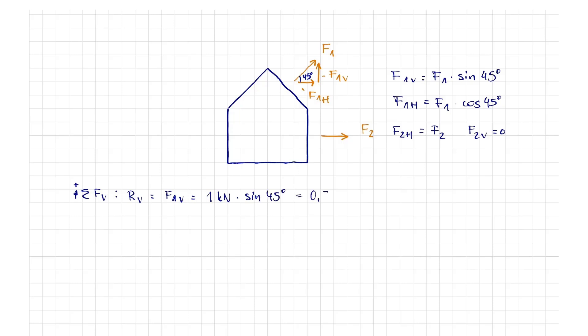For the RH, resultant horizontal, the positive direction points to the right and we use F1H and F2. The result is 1.71 kN.